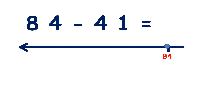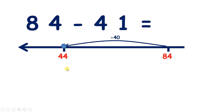Now we could have answered this more quickly. Rather than jumping back in tens one at a time, we can jump back four tens all in one go. So if we start with eight tens in 84 and we take away four tens, we'll have four tens. And we haven't taken away any units yet, so we still have those four units that we started with. So we have 44.